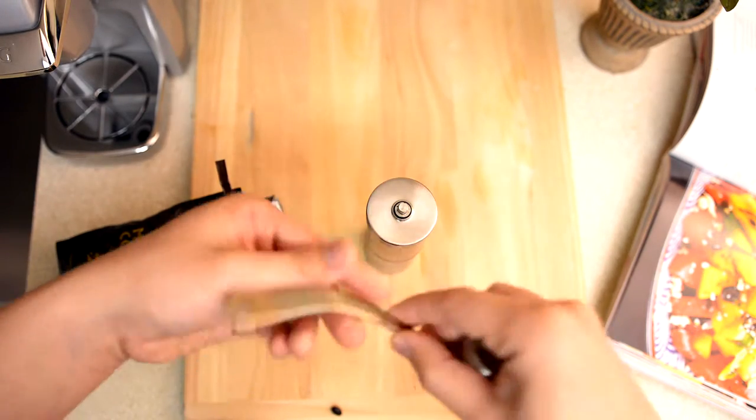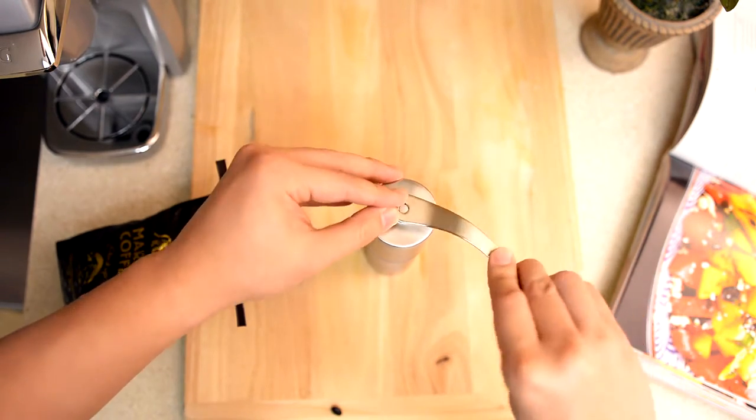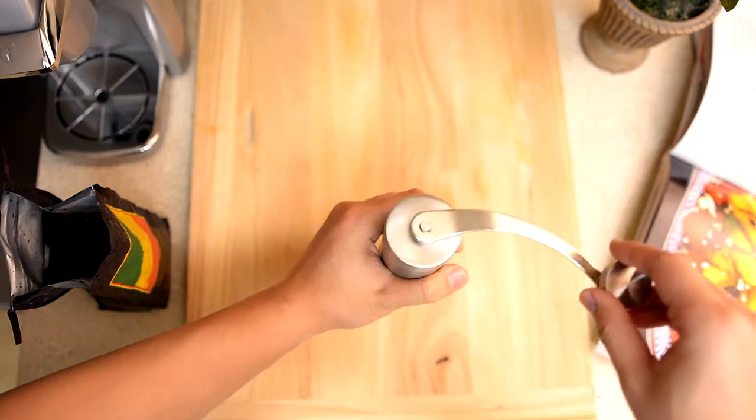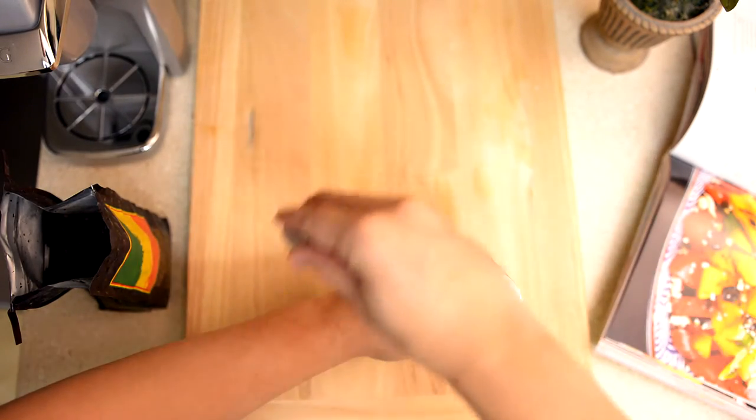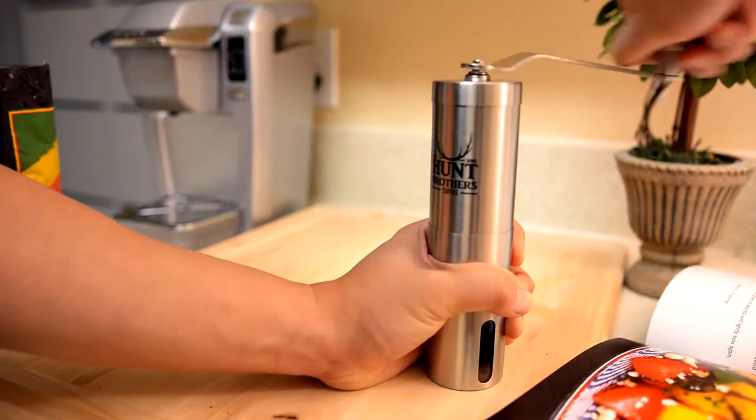Step 3, start grinding. Remember to always grind clockwise. You can grind while standing and have the grinder in the air, or to get a better grip and a nicer feel, simply place the grinder on a table, hold it down from the base and grind away.